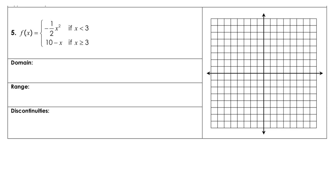In graphing our piecewise function, we need to start out by reminding ourselves that we have a border at 3. We count over to 3 and mark that border. Plugging in 3 gives us negative 9 over 2, which we can write as 3 and negative 4 and a half — that makes it easier to graph. That will be an open circle, so let's go over 3 and down 4 and a half and make our open circle. Now we can use transformations.